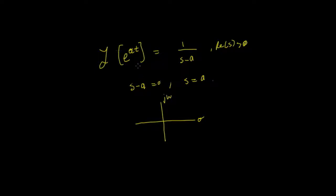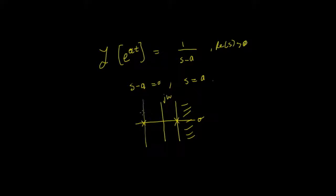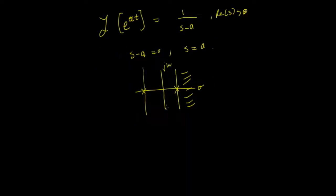For example, if a equals 2, the pole would be at 1 upon s minus 2, so the pole would be at s equals 2. We can draw that on the axis, and it converges on the right hand side. We can also choose a to be negative, which would put the pole over here, and the convergence would be everything from the right hand side of that point. This allows us to choose the pole position with respect to the sigma axis.